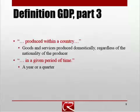GDP is produced within a country in a given period of time. It's not always a national border — we could look at the GDP of California, or Humboldt County, or even global GDP. But most of the time we analyze things within a national border. And as the definition says, it's measured in a given period of time — typically a year or a three-month period called a quarter.